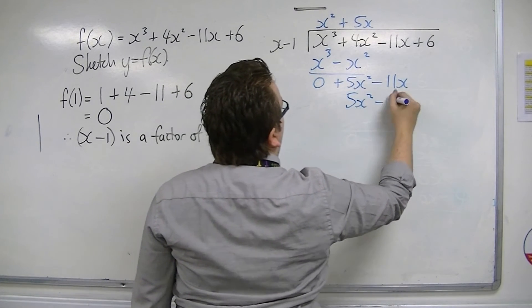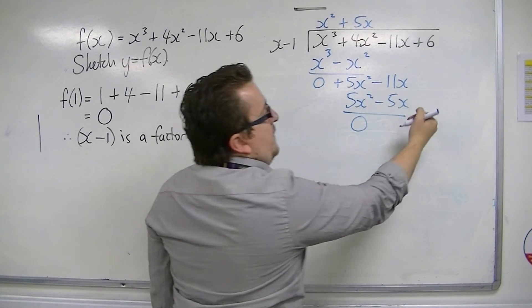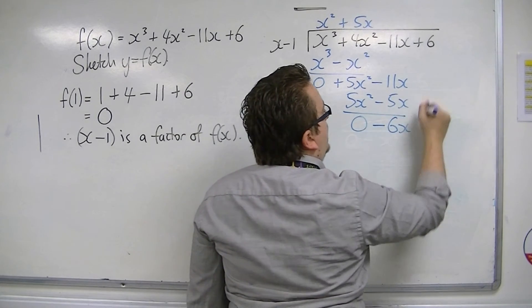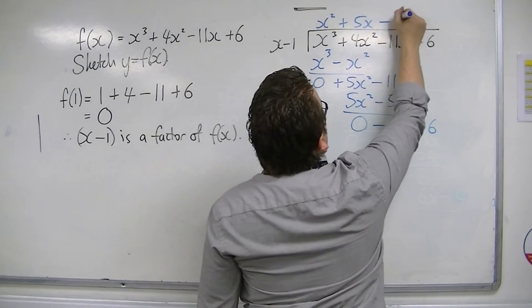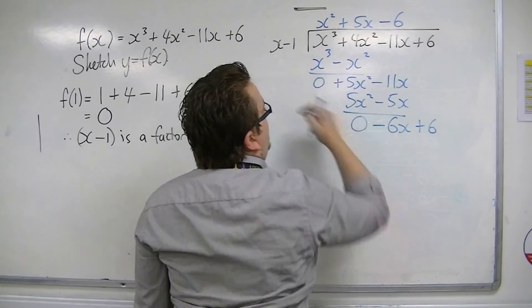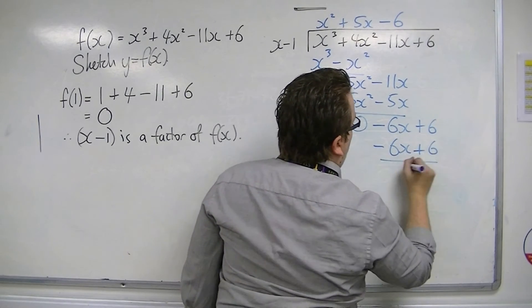Multiply the 5x by those two terms. 5x² minus 5x, 0. Minus 11x take away minus 5x is minus 6x. Bring the 6 down. x is into minus 6x, go minus 6. Minus 6 times these two terms, minus 6x plus 6, 0 plus 0.